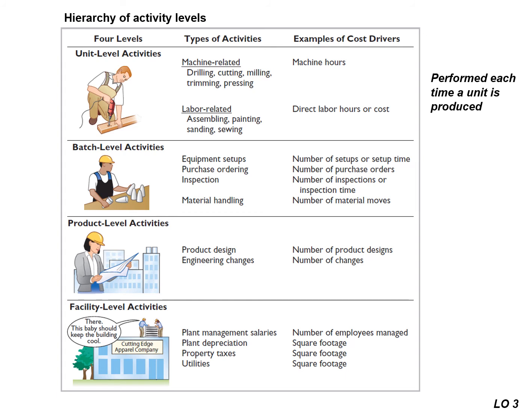Unit level activities are performed each time a unit is produced. If it's machine related, an appropriate cost driver might be machine hours, whereas if it's a labor related activity, then direct labor hours or cost might be more appropriate. Batch level activities are performed every time a batch is handled or processed. Examples include equipment setups, purchase ordering, inspections, and material handling. The cost driver for batch level activities — such as number of setups, purchases, inspections, and material moves — is very different than for unit level activities.